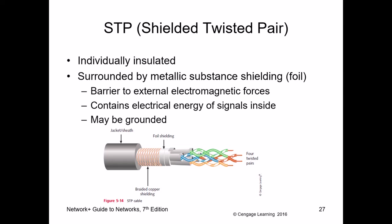If your wires must run through a manufacturing warehouse with heavy machinery and electromechanical devices emitting strong electromagnetic interference, using unshielded twisted pair — or even STP — will result in corrupted data. Power transmission lines also emit tremendous electromagnetic interference. In these environments, fiber optic cable is the best solution.